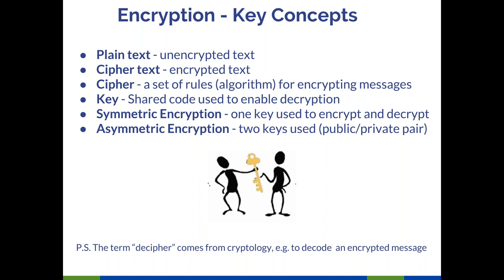We're going to cover some basic concepts that you'll hear as we talk about encryption. Plain text is unencrypted text — that's most of what you're looking at right now. This webinar is not encrypted, which is making it much easier for everybody to take in the information. Cipher text is information or text that is encrypted — information sealed up in that secure envelope. The cipher is the set of rules for encrypting information. A key is usually a password of some kind, but can be other things — a physical key is an example. It's a shared code that we can use to enable decryption of messages.